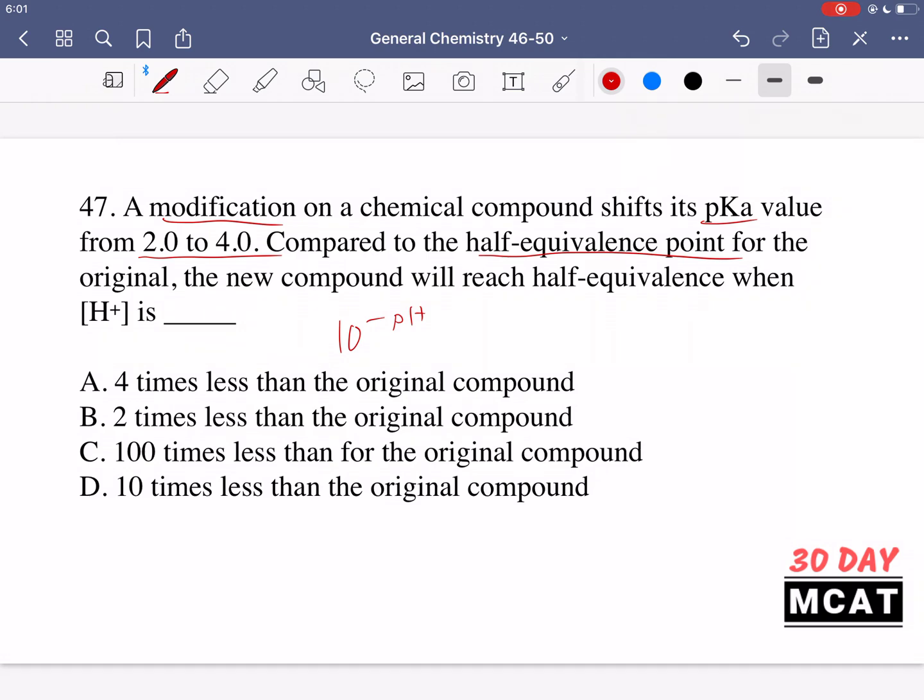If we're talking about the pH of 2, then that's going to be 10 to the negative 2, and if we're talking about pH 4, it's 10 to the negative 4. You'll notice that the difference between these two is 100.